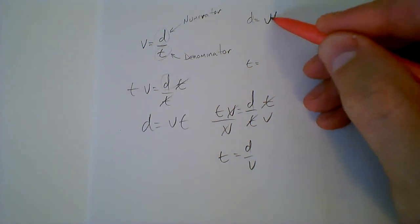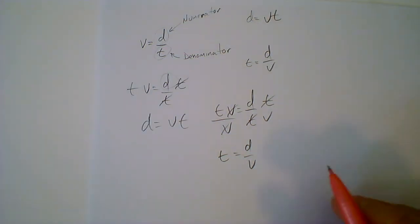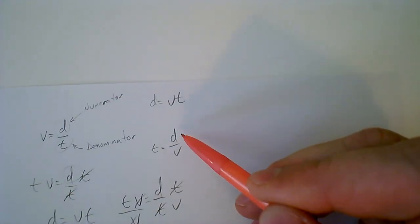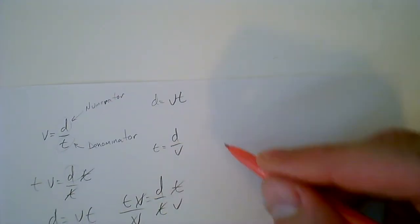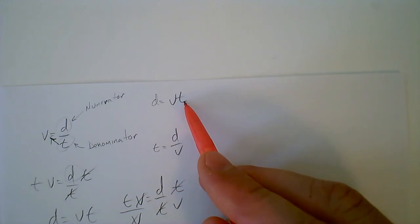So over here, d equals vt. Over here, t equals d over v. And just a quick way to think about this, taking a look at the three rearranged equations, if you are trying to isolate the d, just move the t to the top, and you're going to get d equals v times t, which is the case.